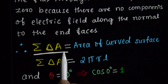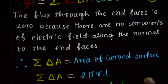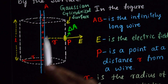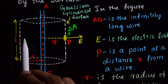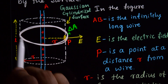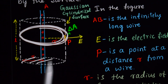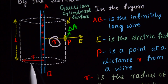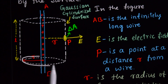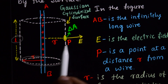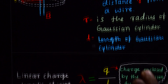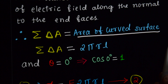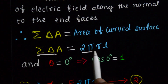So we consider only the curved surface of the cylinder. The summation of δA equals the area of the curved surface — we are not considering the end faces because the flux through them is zero. The area of the curved surface of the cylinder is 2πR × L. Therefore, summation of δA = 2πRL.